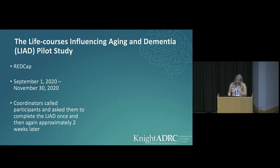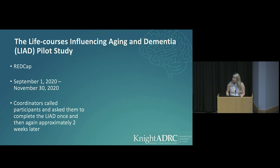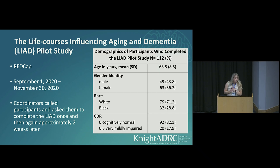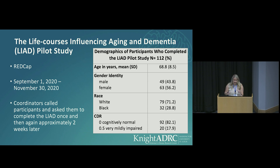Between September 1st through November 20th, our research coordinators called and asked participants to participate in this pilot study. We aimed for an N of about 100. Participants were asked to complete the LIAD battery once and then again two weeks later. We actually had 112 participants agree to complete it. Their mean age was 69, over half were female, and almost 29% self-identified as Black or African American. We also tried to get as many very mildly symptomatic or CDR 0.5 participants as possible, and we ended up with 20.